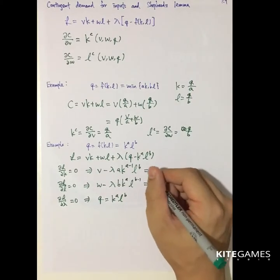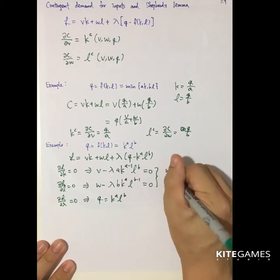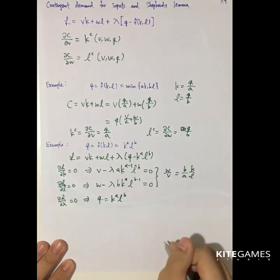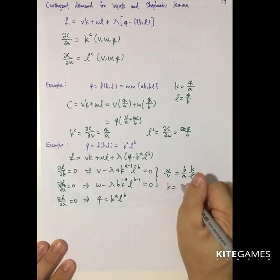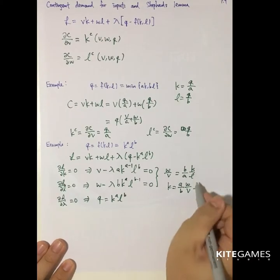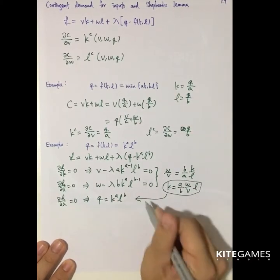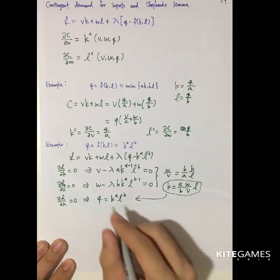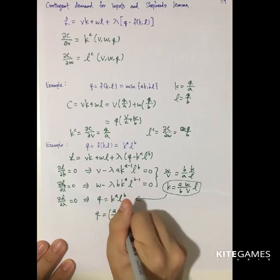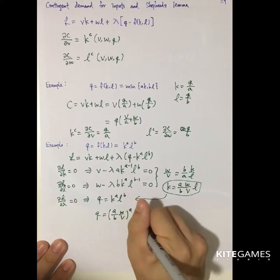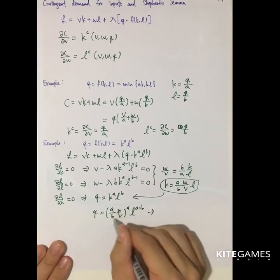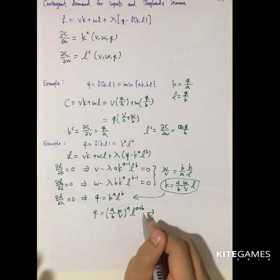Using the two first-order conditions, I divide the first by the second to get W over V equal to B over A times K over L. Then K equals A over B times W over V times L. Next, I substitute this expression for K into the output constraint, Q equals K^A times L^B. I then rearrange and take the power of 1 over A plus B to solve for L.